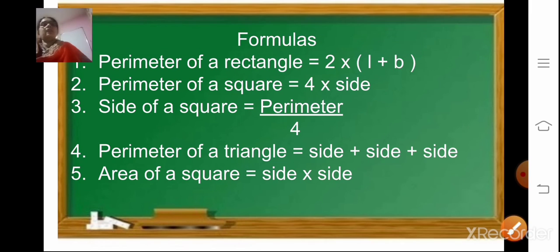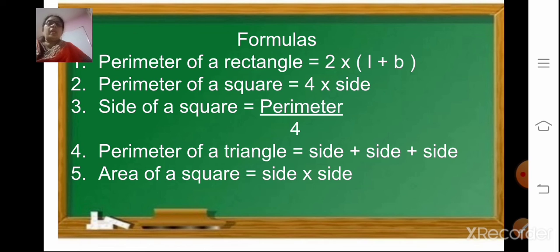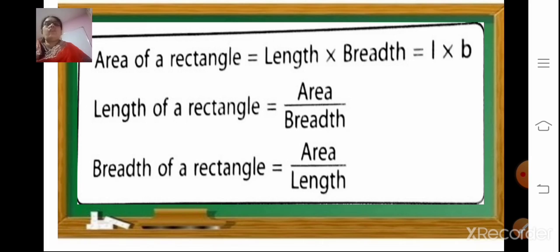With this we complete the portion for your exam. Exercises 13.3 and 13.4 are omitted. Let us revise all the formulas: perimeter of a rectangle is 2 into length plus breadth; perimeter of a square is 4 into side; side of a square is perimeter divided by 4; perimeter of a triangle is side plus side plus side; area of a square is side into side; area of a rectangle is length into breadth; length of a rectangle is area upon breadth; breadth of a rectangle is area upon length.